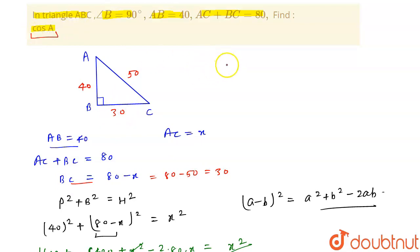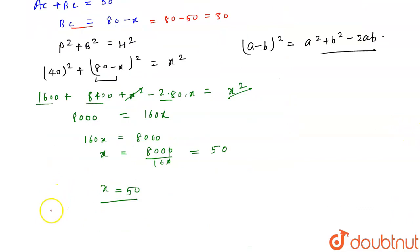Now we have to find cos A, and cos A is equal to base by hypotenuse. So it will become cos A is equal to 40 upon 50, so zeros will cancel out and cos A will become 4 by 5.